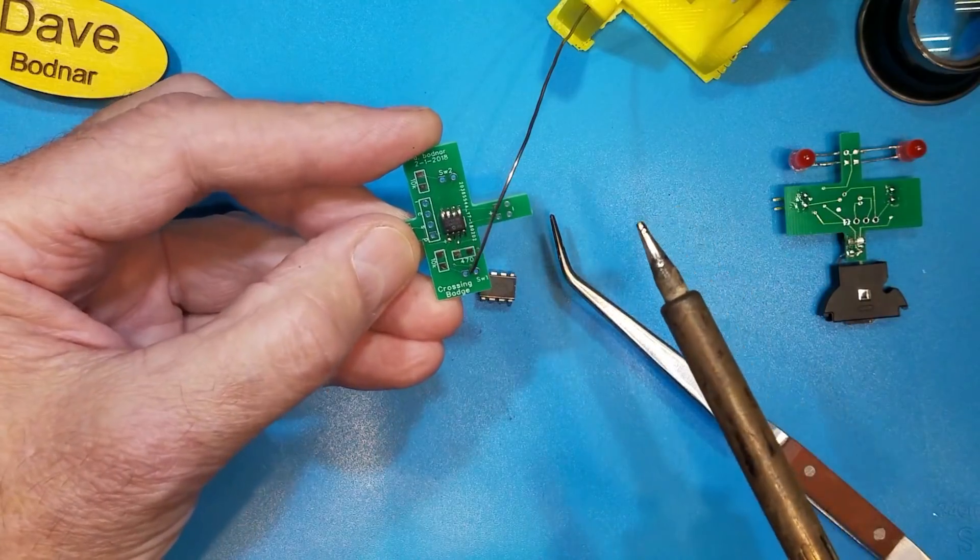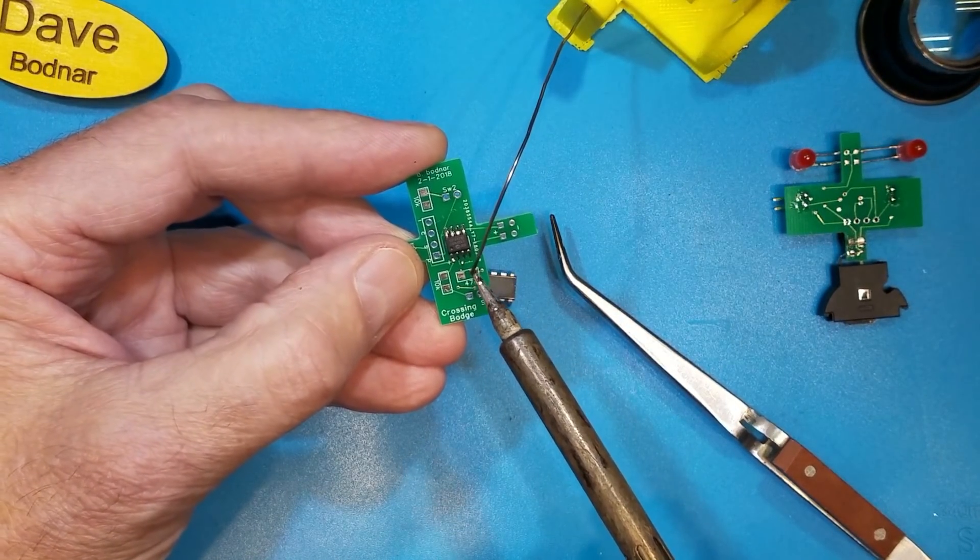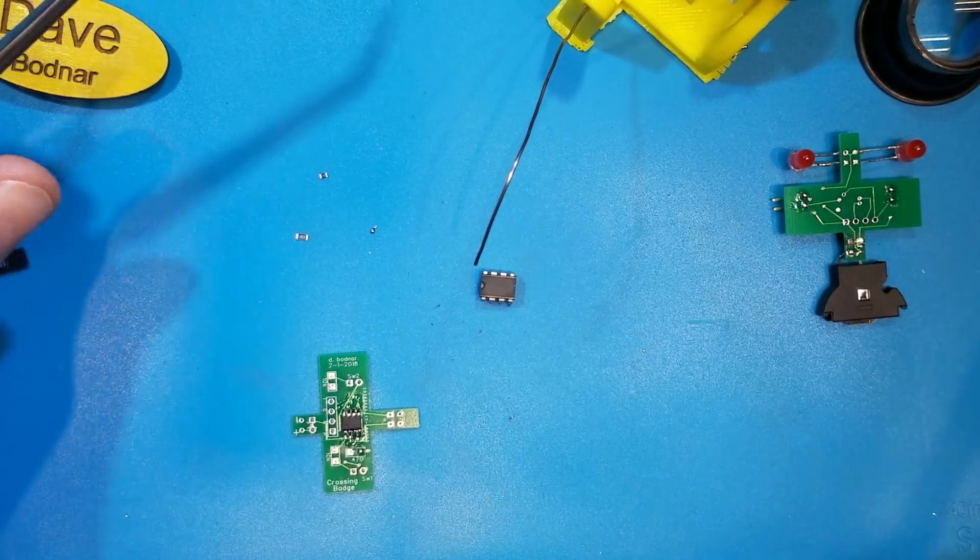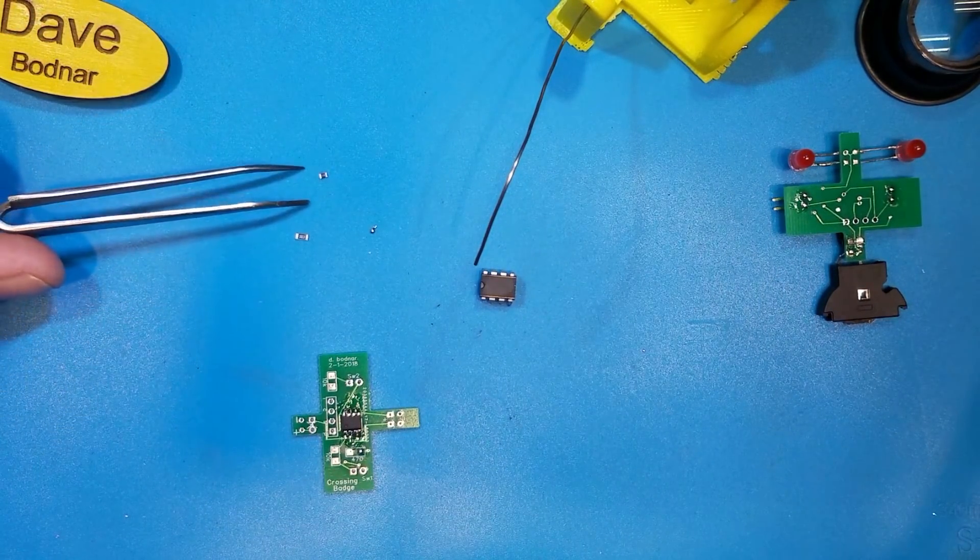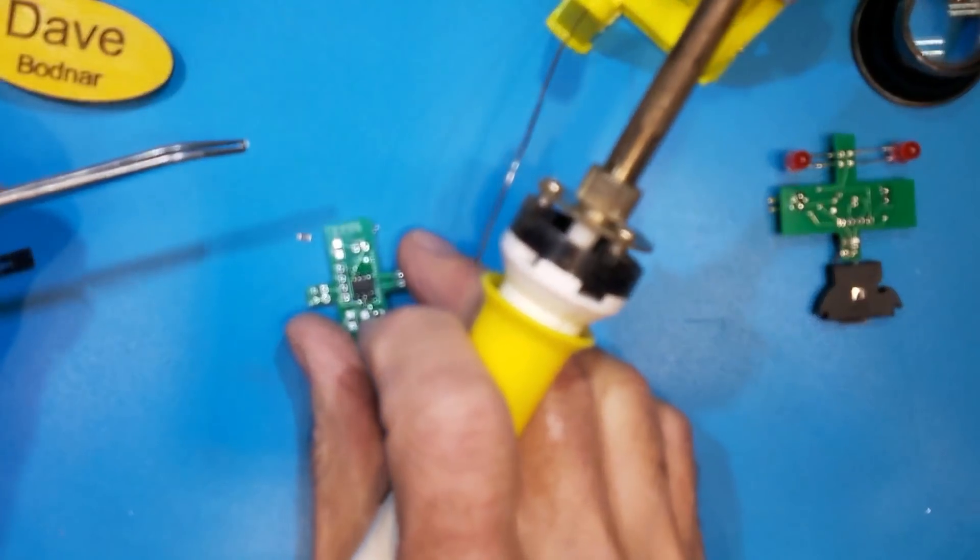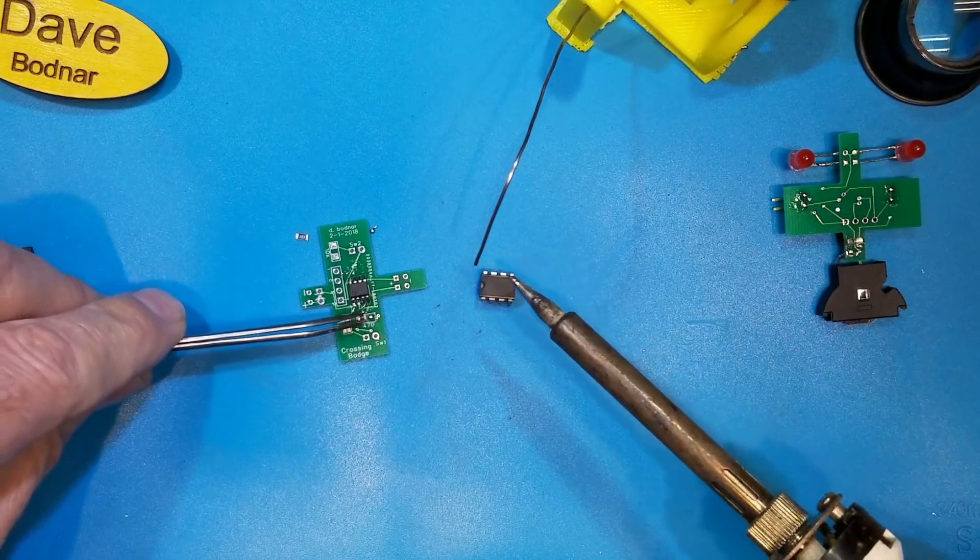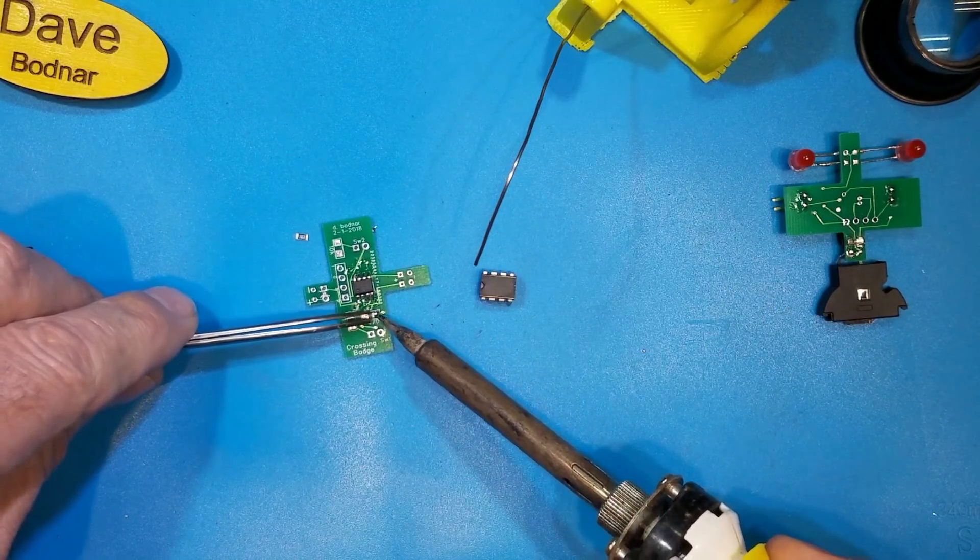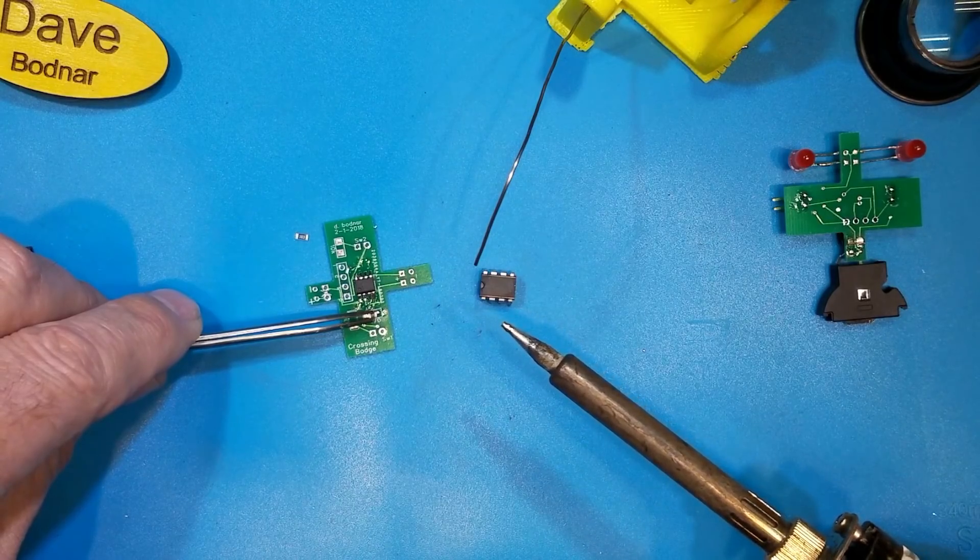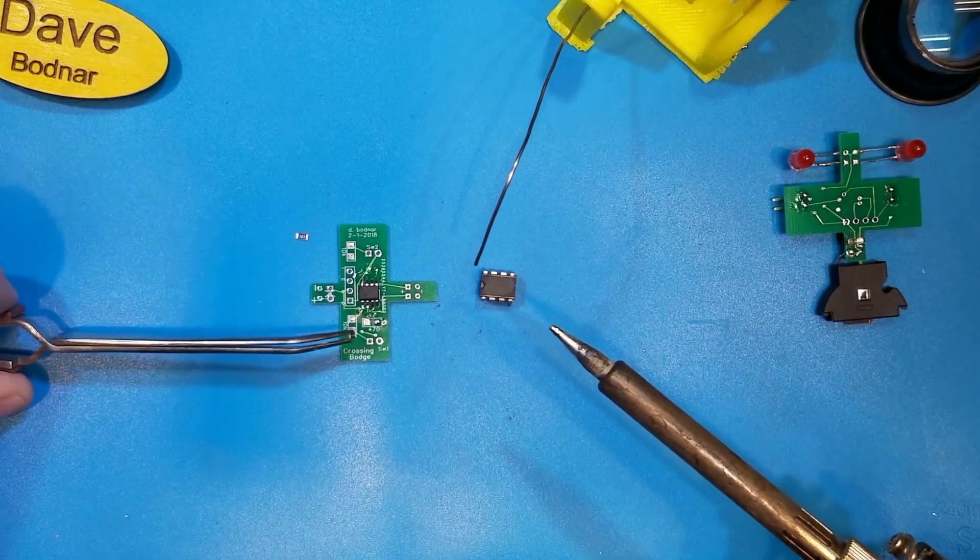Okay, the next thing I want to do is put the 470 ohm resistor on. I'm going to put a little bit of solder on one of its pads just as I did the other. Now the 470 is way too small for me to do just with my fingers. So I'm going to pick it up with the tweezers. I'm going to bring it over to that solder pad.